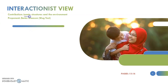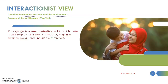Let's move now to the interactionist view. This view combines two factors: the innate, genetically predisposed linguistic structure and the effect of the environment. Its proponent is recognized for the wug test. According to the interactionist view, language is a communicative act involving an interplay of linguistic structures, cognitive abilities, and the social and linguistic environment — that is, the input from the child's environment. The interplay between these factors produces language and allows language acquisition.